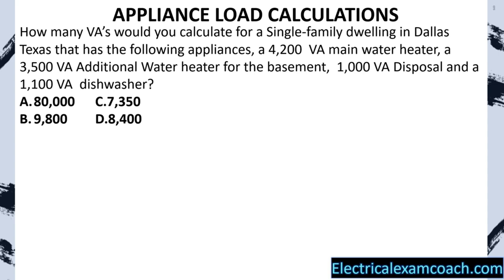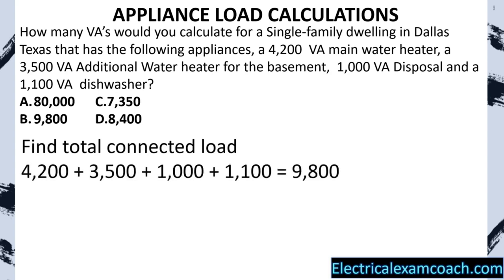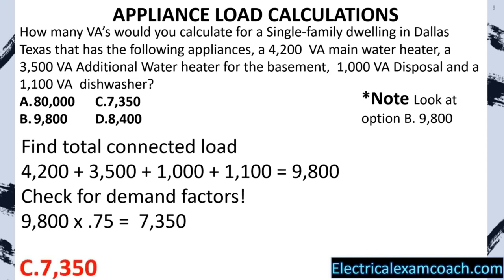Practice problem: How many VAs would you calculate for a single-family dwelling in Dallas, Texas with a 4,200 VA main water heater, a 3,500 VA additional water heater for the basement, a 1,000 VA disposal, and a 1,100 VA dishwasher? Find total connected load: totaling it up equals 9,800. Check for demand factors — sure enough, we have four or more fixed appliances, so we apply the 75% rule. We take 9,800 multiplied by 0.75, giving a new reduced load of 7,350 VAs. Note that option B was 9,800 as if you didn't apply the 75% rule — you've got to be careful. We select C.